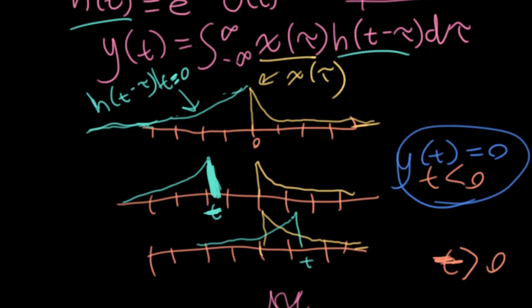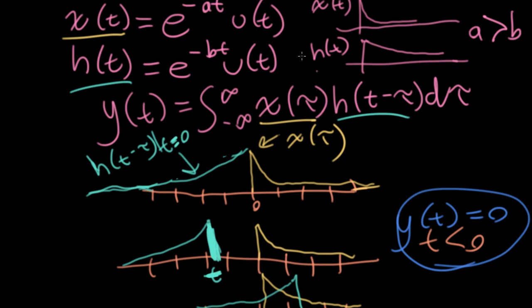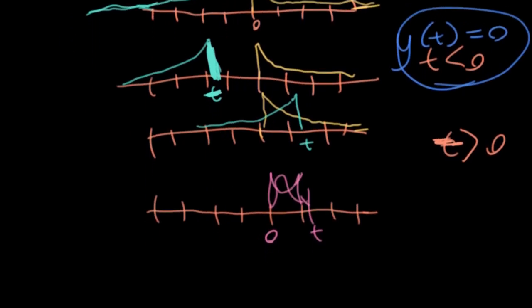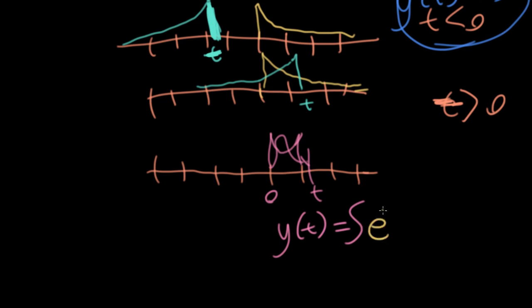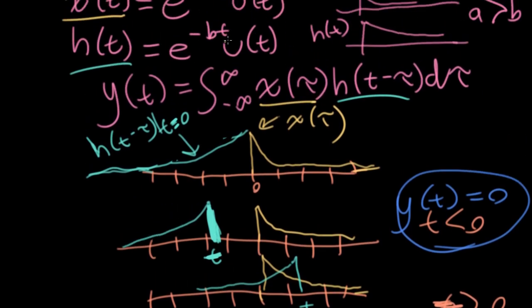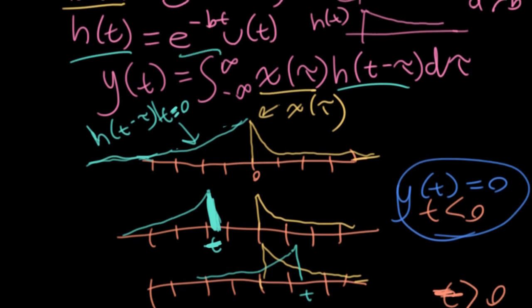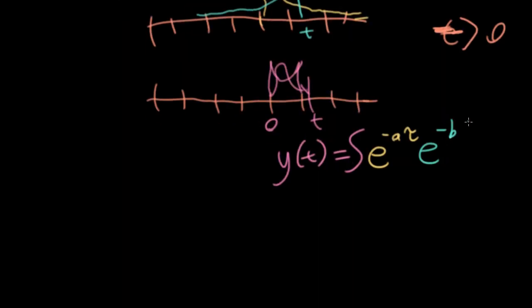So let's plug in here the actual functions that we need to worry about. So x of tau will be e to the minus a tau. So y of t is going to equal my integral, we'll write this as e to the minus a tau. And what's h? h has a decaying exponential, but it has a b in it. That's this guy. So down here I've got e to the minus b, t minus tau, d tau. So what are the limits? The limits are going to go from zero down here to t up here.